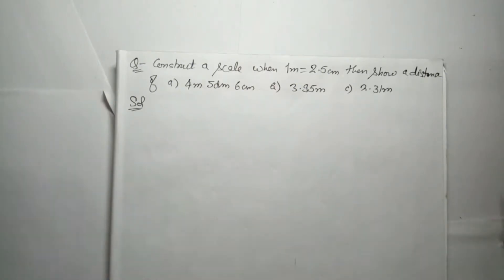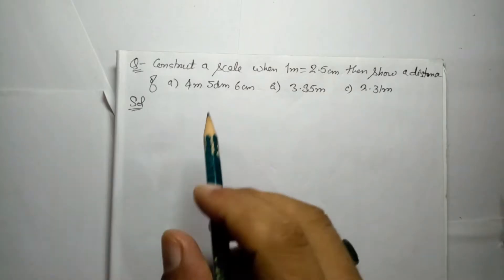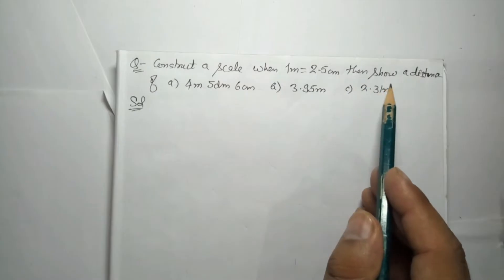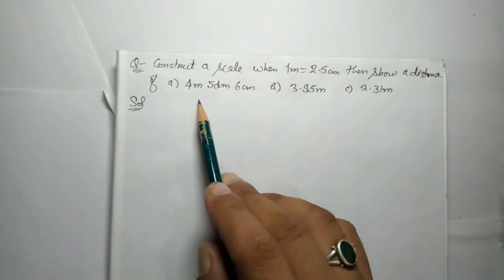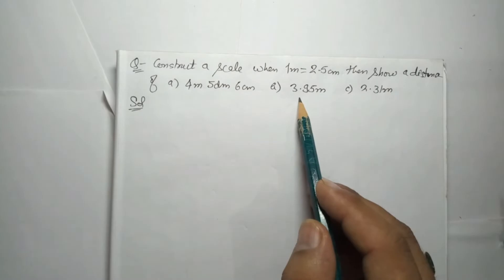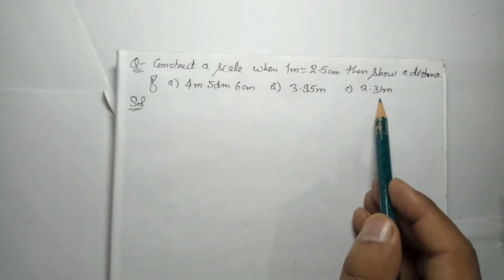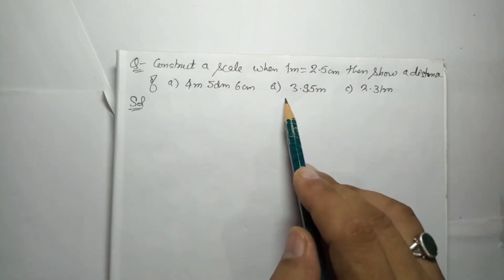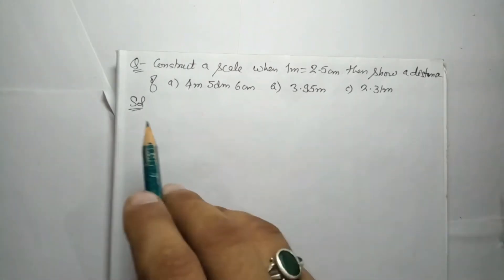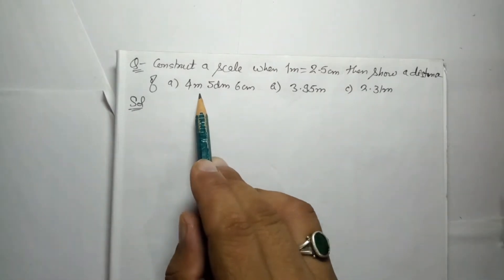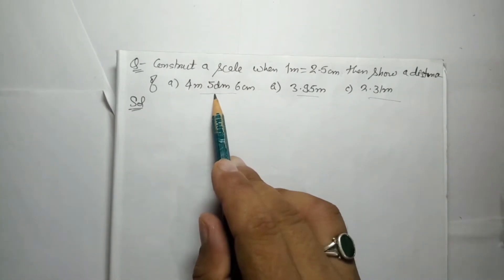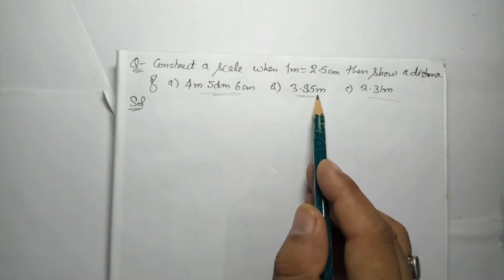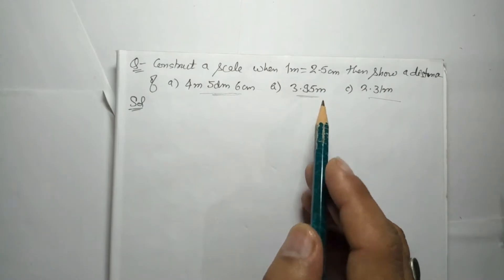Hello everyone. We will solve another question on scale. The question is: construct a scale when 1 meter equals 2.5 centimeters, then show distances of 4 meter 5 decimeters 6 centimeters, 3.95 meters, and 2.3 meters. In this question, no scale type is specified, whether plane scale or diagonal scale. Check the values to be shown — they have three units, or one main unit with subdivisions up to two decimal places, so this is a diagonal scale question.